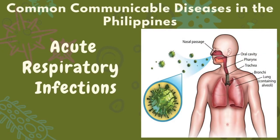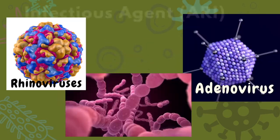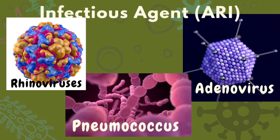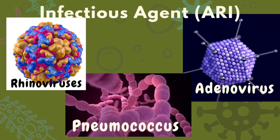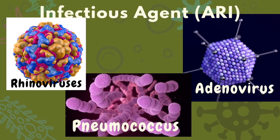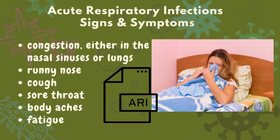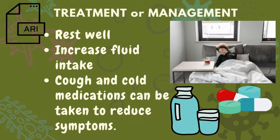These are the common communicable diseases in the Philippines. First is ARI or Acute Respiratory Infection, with infectious agents including rhinovirus, pneumococcus, and adenovirus. These are the signs and symptoms of ARI, and here is how to treat or manage acute respiratory infections.